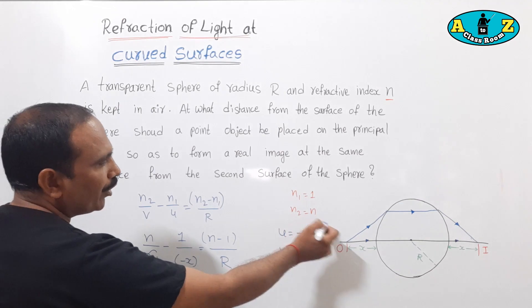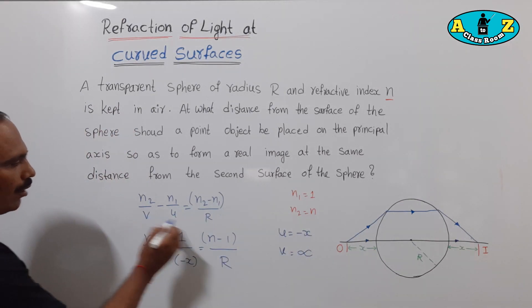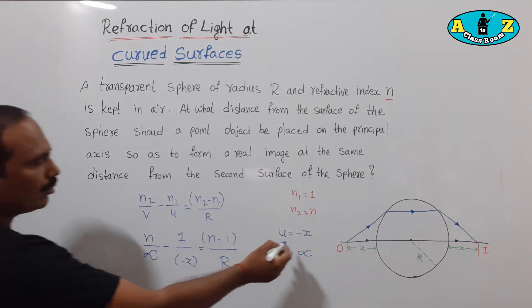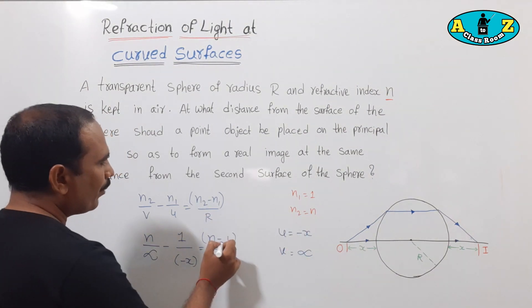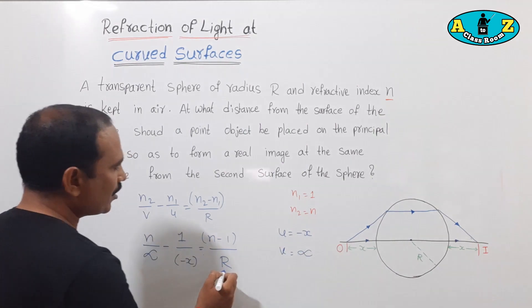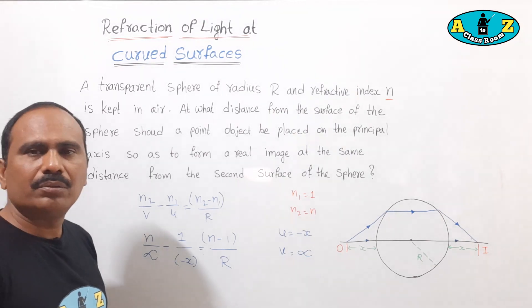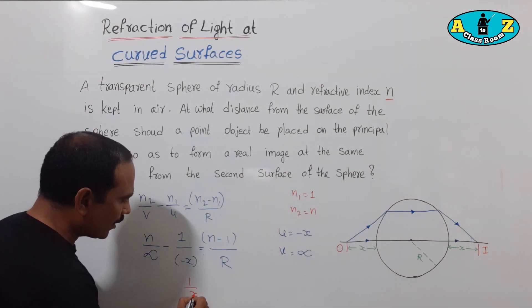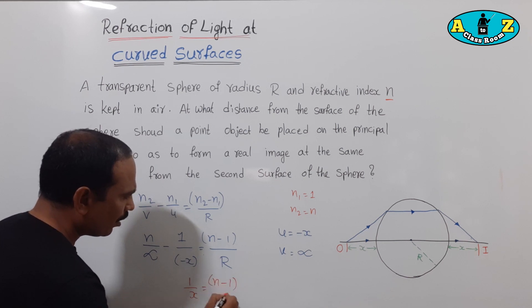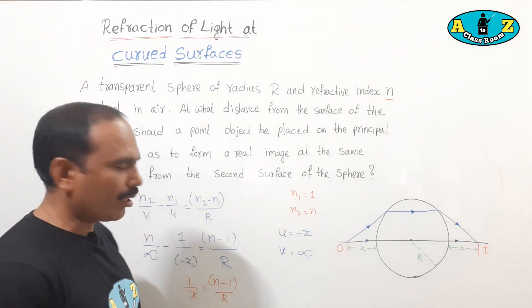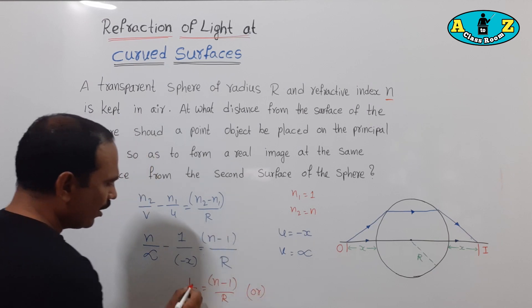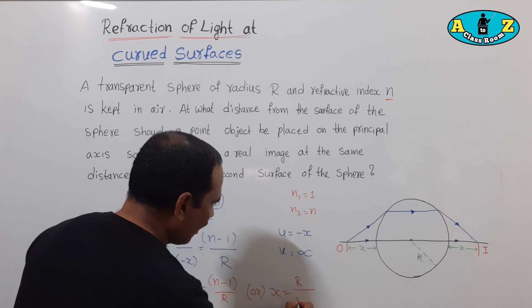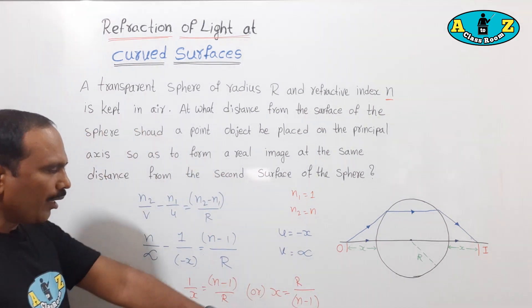n2 value is refractive index of the sphere n, by v equals infinity; minus n1, refractive index of air, 1, by u equals object distance minus x; equals (n2 minus n1) over R, that is (n minus 1) over r. Since n over infinity equals 0, and minus times minus gives plus, we get 1 over x equals (n minus 1) over r. Taking the reciprocal, x equals r over (n minus 1).